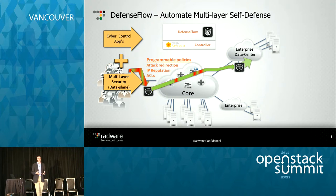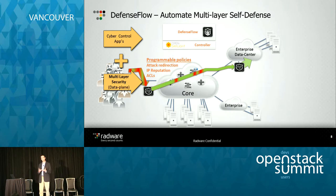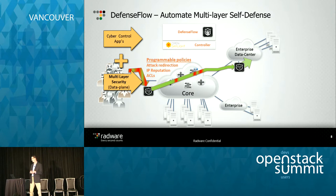What you have here is a cyber control plane built on top of the OpenDaylight controller. It takes telemetry from the entire network, correlates it, and provides a much richer set of information to make decisions. Based on the policy set in the application and on the controller, it determines where in the network to provide the best mitigation, delivering multiple layers of network defense.